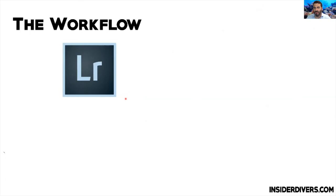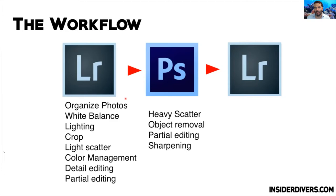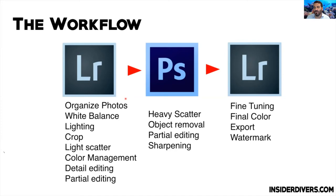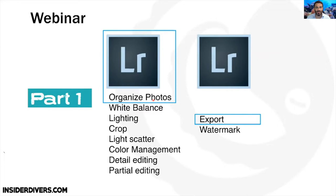The traditional workflow is: start with Lightroom to import and organize photos, then go to Photoshop if needed, then back to Lightroom. In Lightroom you'd do white balancing, lighting, slight cropping, light scatter removal, color tuning. In Photoshop you'd do heavy scatter removal, dominant object removal, sharpening, and partial editing. However, Lightroom has become so good in the last two to three years that you can skip Photoshop almost entirely — Photoshop features have been entering Lightroom — so that's why we're doing four sessions on Lightroom.